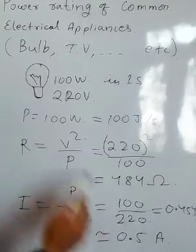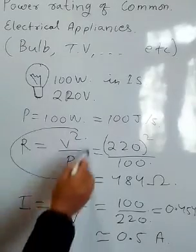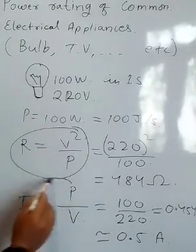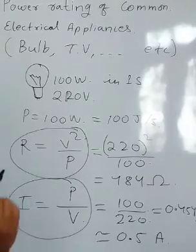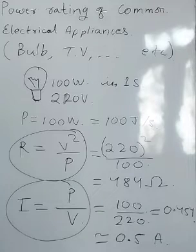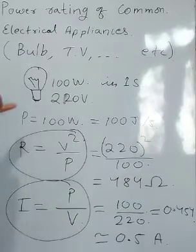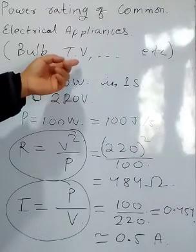These are the electrical appliances. Similarly, for other appliances, you can find the same. You have to see what is written on any appliance like the television on the back side, or the electric fan or heater.